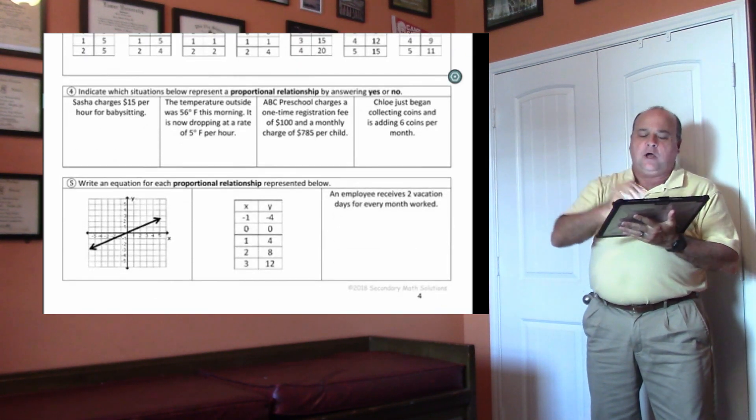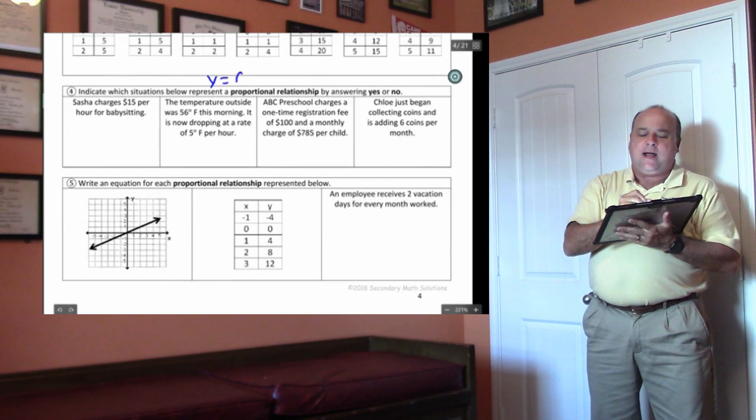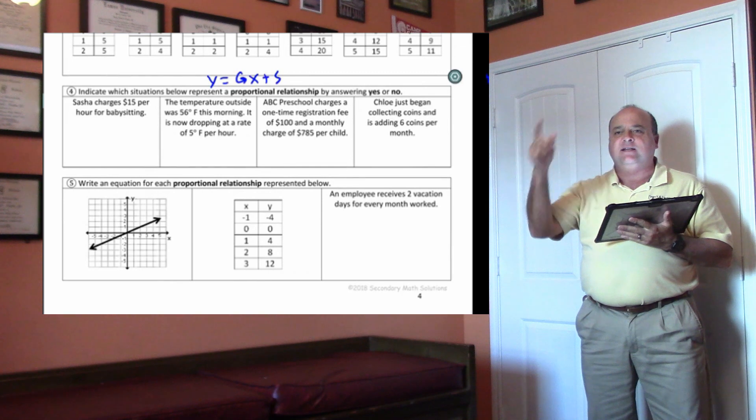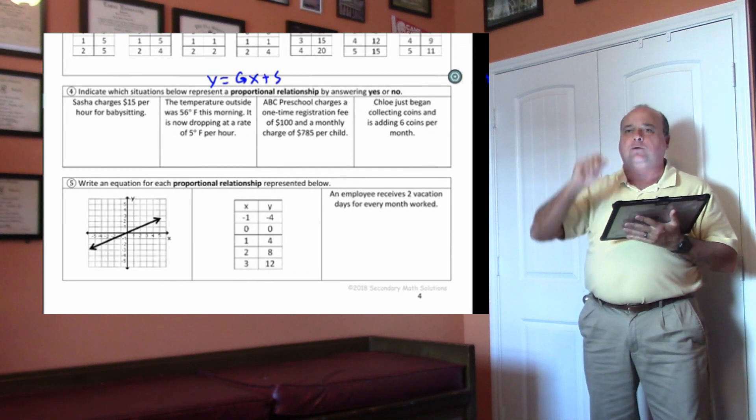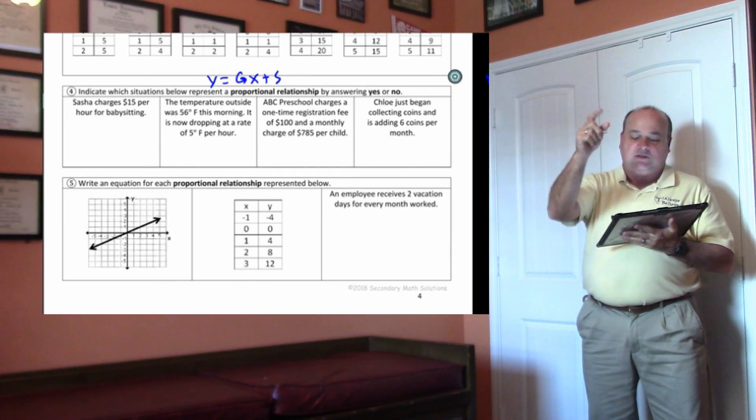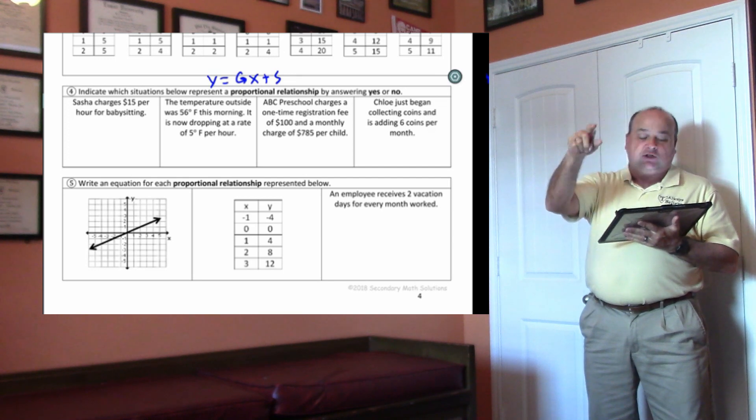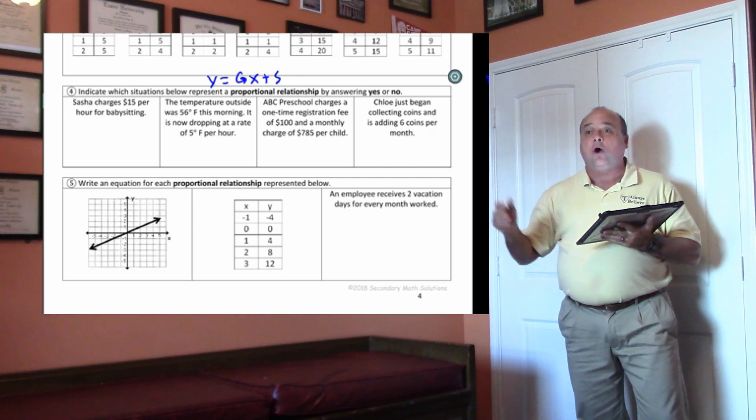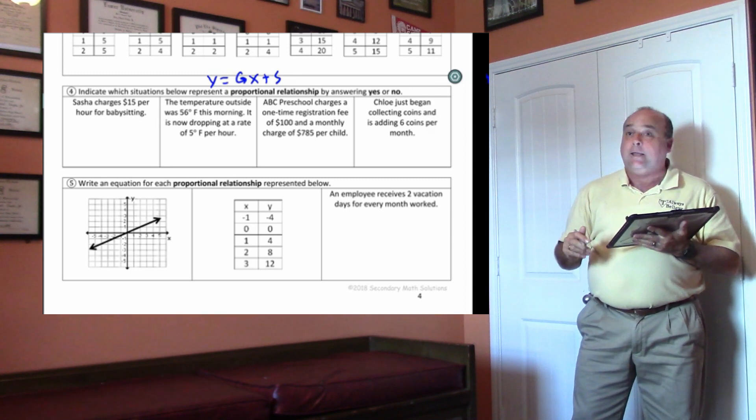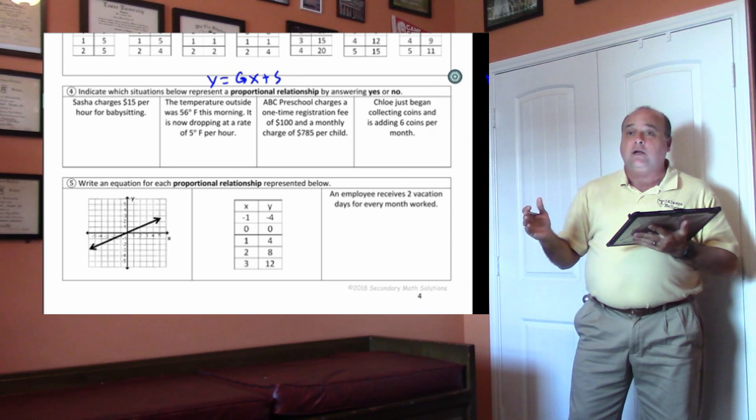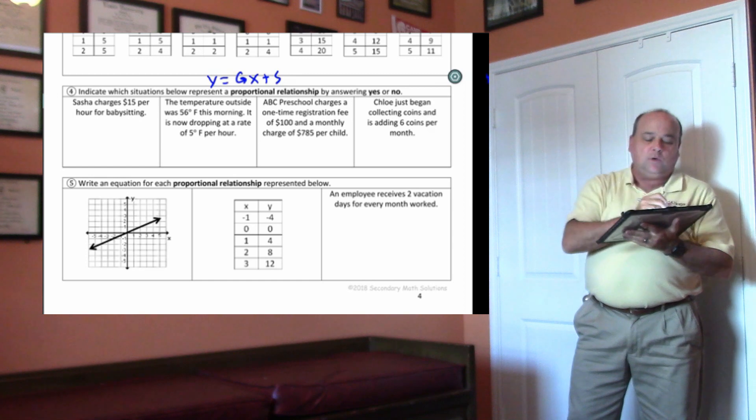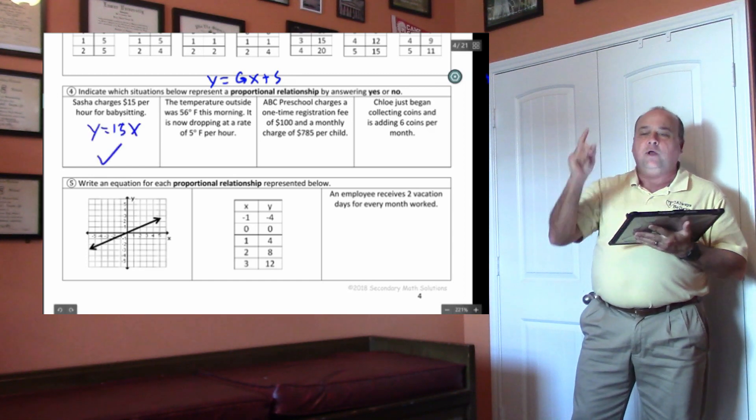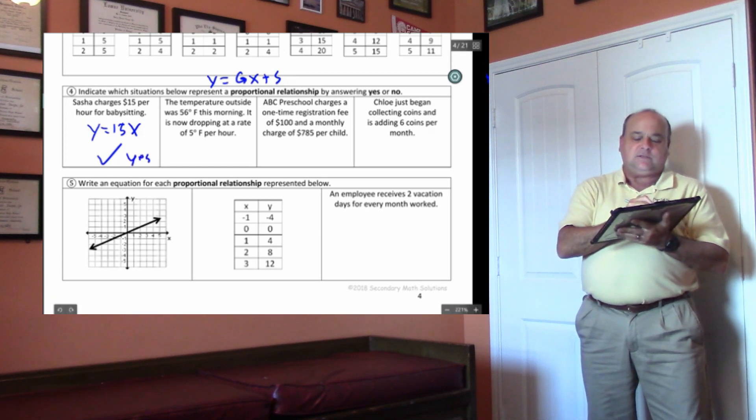On these problems, on word problems, remember, you could do y equals gx plus s with a word problem. If it does not have a starting number, it has direct variation. For instance, I'm going to do two of them. Sasha charges $15 per hour for babysitting. Does she charge an initial fee? She does not have a starting number, does she? So the equation would just be y equals 15x, and it would have direct variation with it. This would be yes.